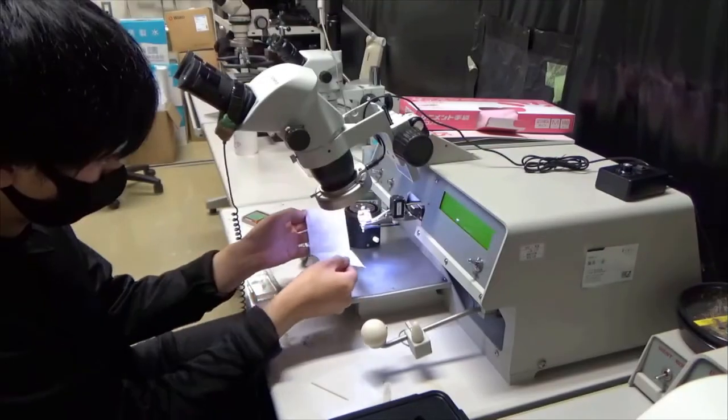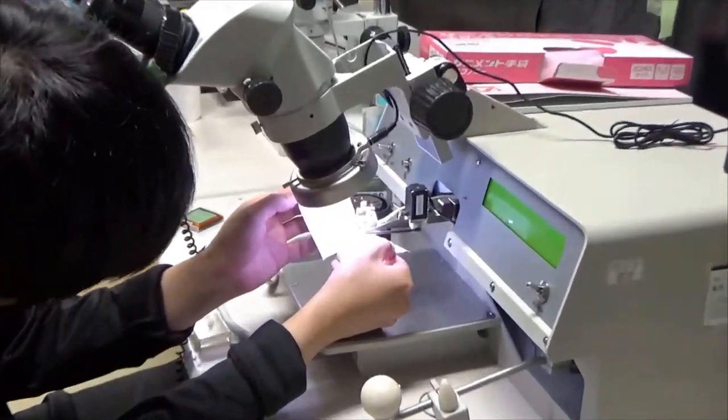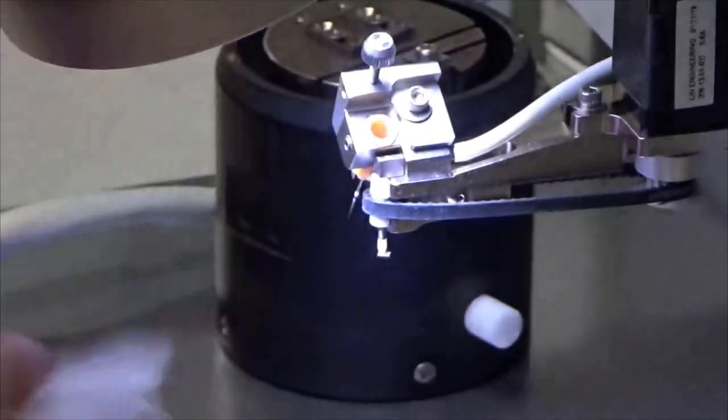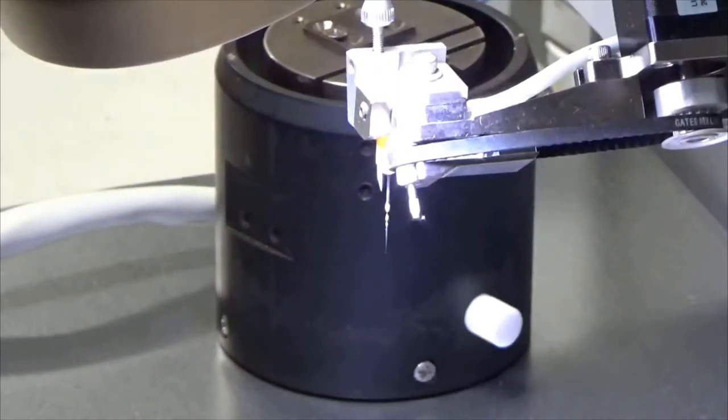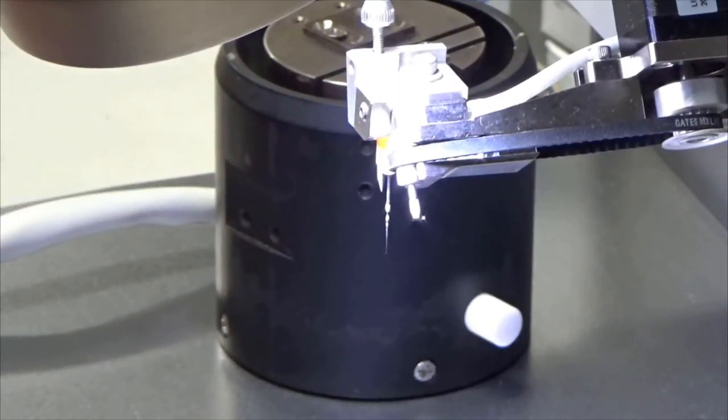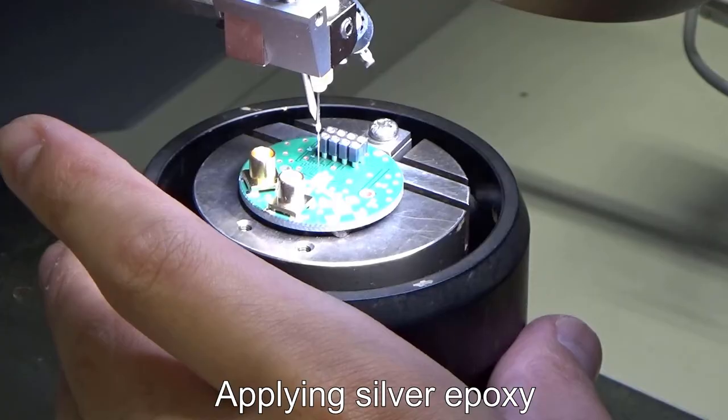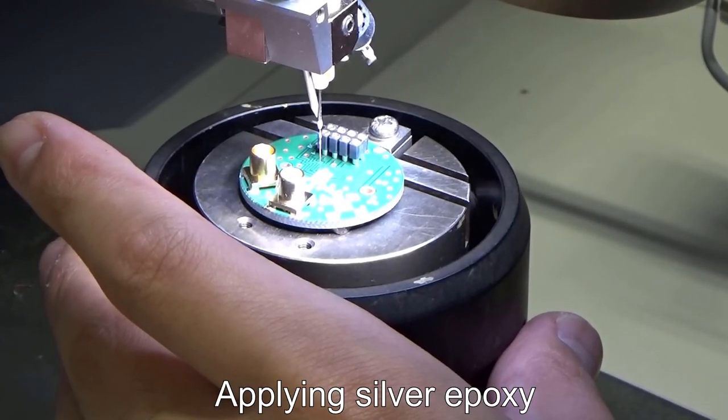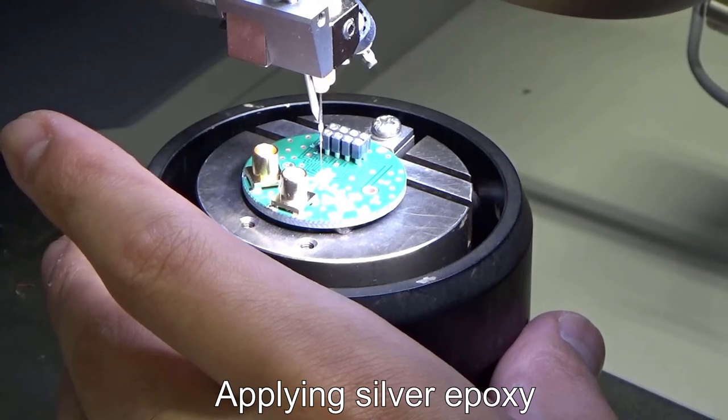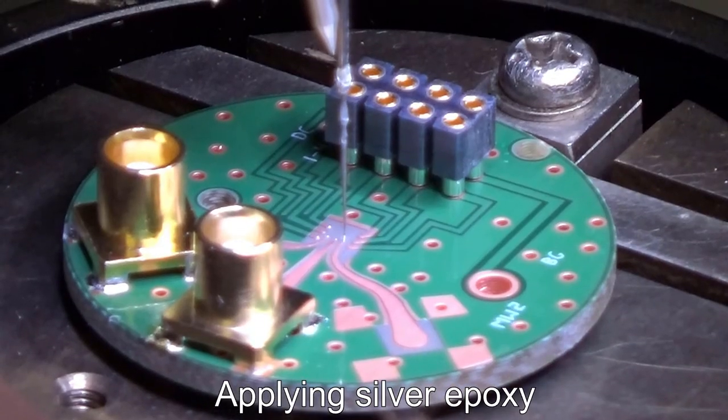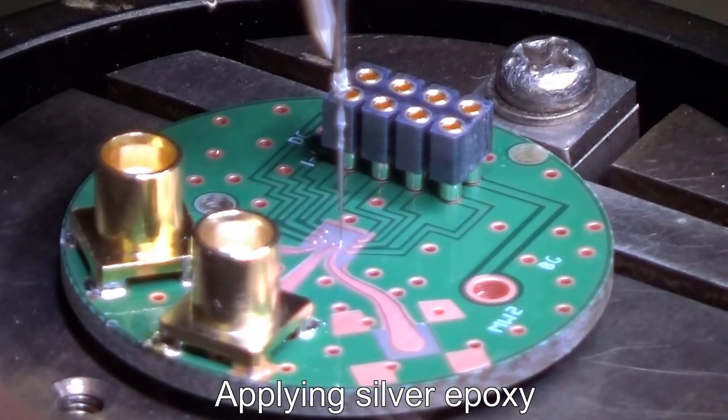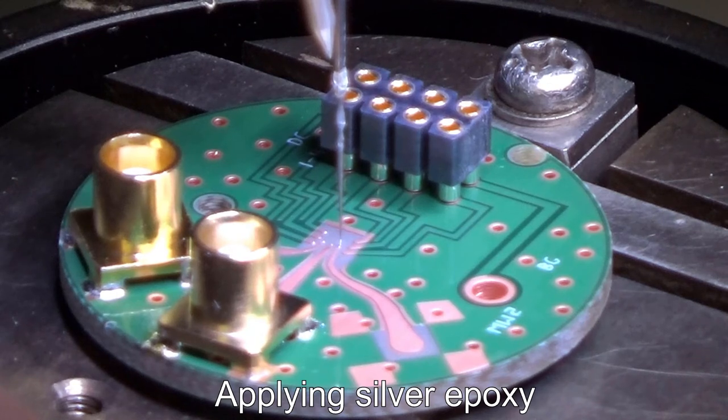We then attach each device to a PCB with the aid of a dye bonding machine using silver paste. Using a sharp needle, we apply silver paste to each contact point of the PCB.